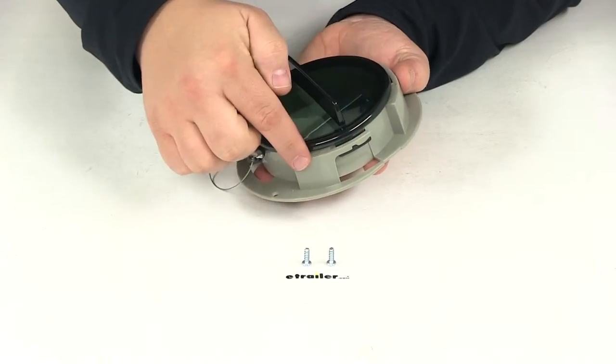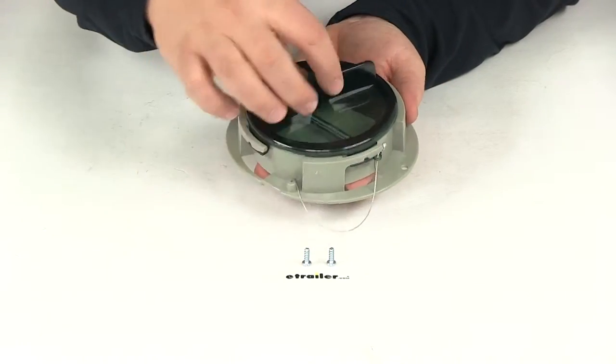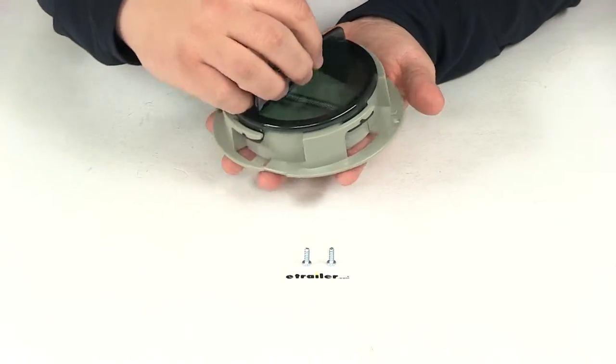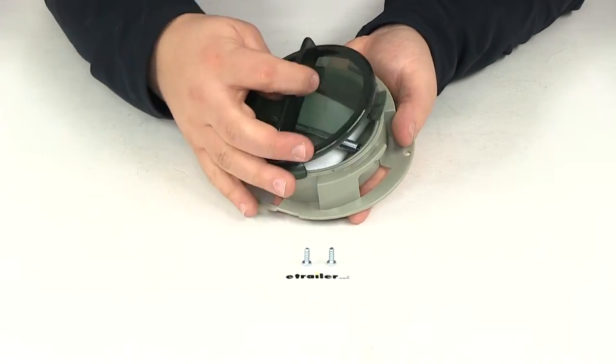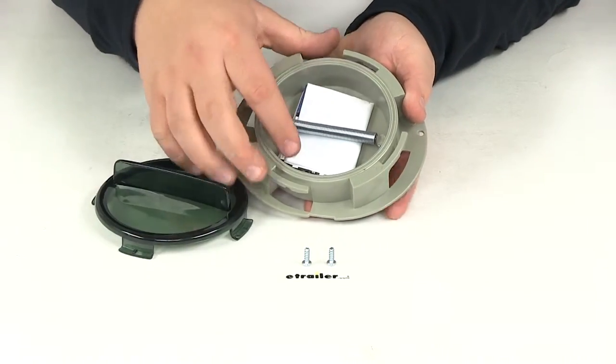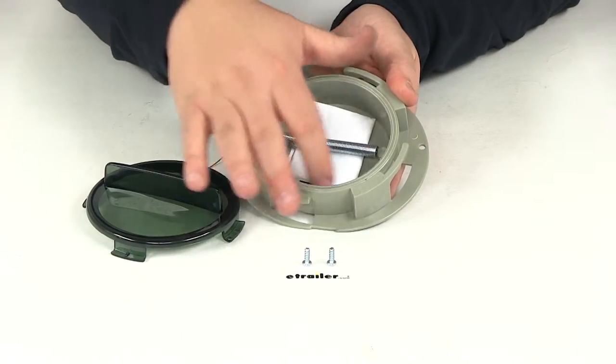You can see here that it has these notches that go all the way around the document holder here at the housing. All you got to do is twist the cap a small turn, lift it up, and then it's going to expose whatever it is that you have installed in this area here.